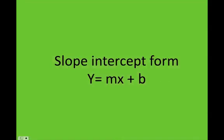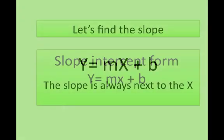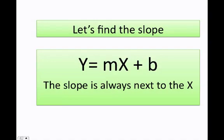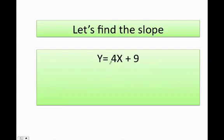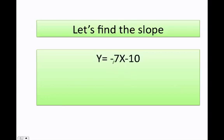How do I figure out the slope with the slope-intercept form? Remember, y always equals mx plus b, where m is the slope. The slope is always next to the x. So anytime you have something like this, the value next to x is 4, so the slope is 4. What about here — what is the value next to the x? I hope you say negative 7.